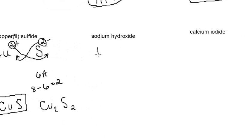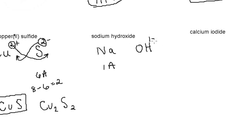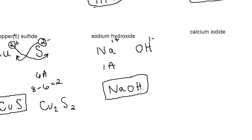Sodium is in group 1A — symbol Na — so it has a 1 plus charge. Hydroxide is not on the periodic table because it's a polyatomic anion. Hydroxide looks like OH and has a charge of 1 minus. Your chemistry book will have a table with all the polyatomic anions. Using the criss-cross rule with sodium (1+) and hydroxide (1−) gives NaOH — that's the formula for sodium hydroxide.